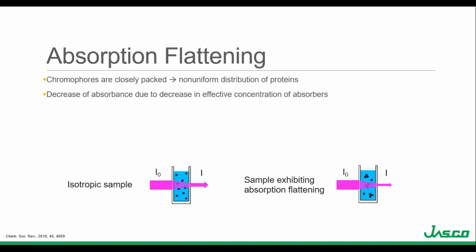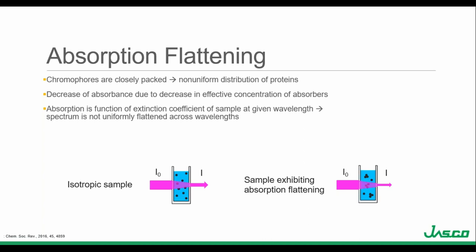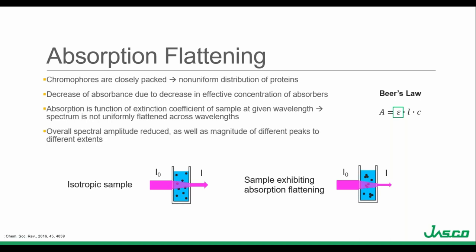Absorption flattening: in an isotropic sample, proteins and concentration are uniformly distributed throughout the solution, while in an aggregated or membrane sample, protein chromophores are tightly packed in localized areas while the rest of the solution has little to no protein. This non-uniform distribution leads to a breakdown of the Beer-Lambert Law — the effective concentration of chromophores decreases, flattening the absorbance and therefore the CD signal. Since a correction term can't be applied uniformly across the wavelength range, the overall spectral amplitude is reduced and the spectrum is distorted.